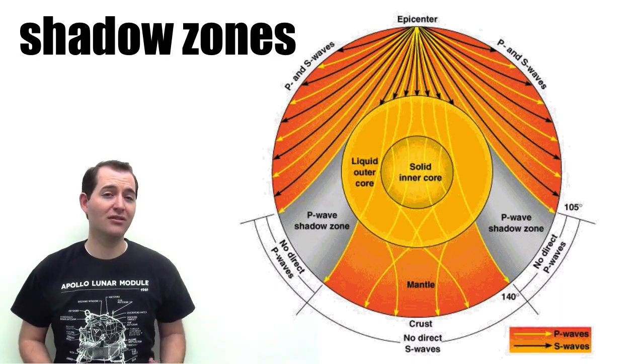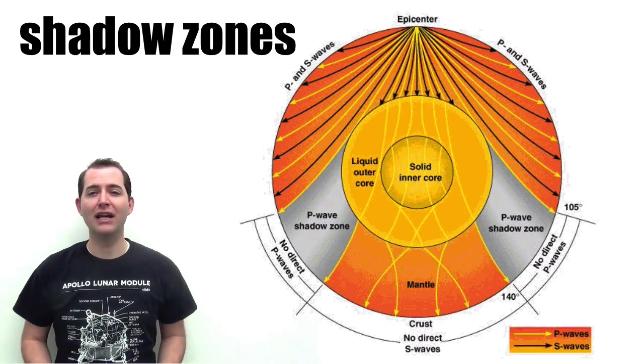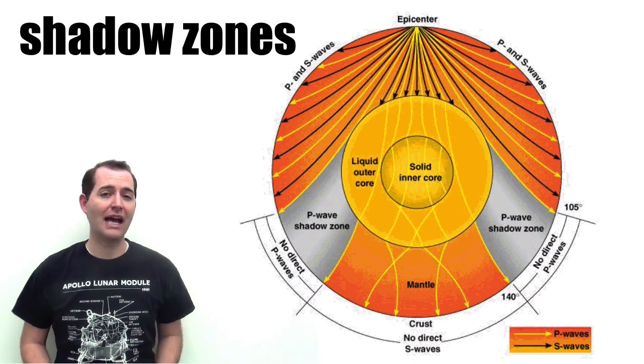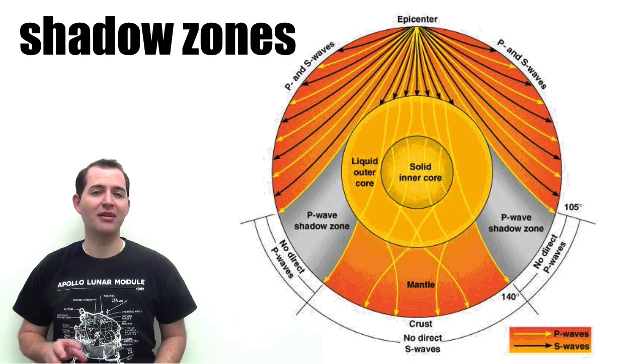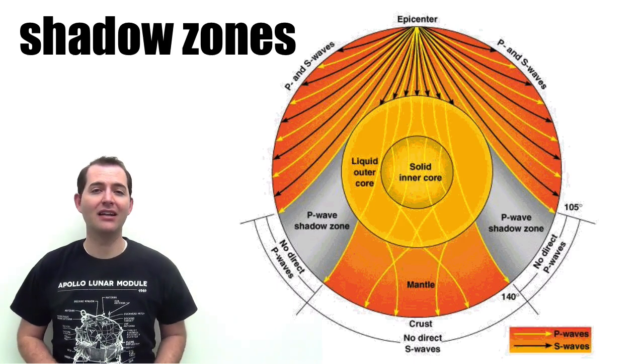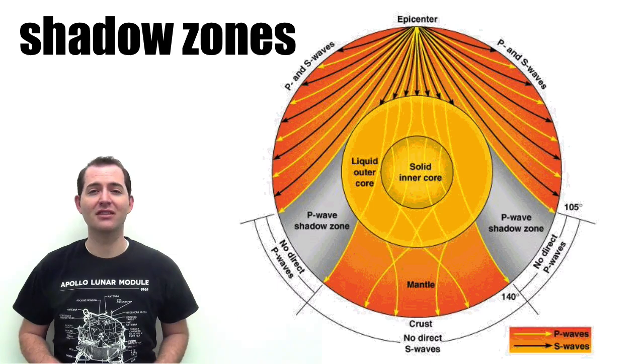These are locations around the Earth where these waves cannot be detected when an earthquake happens. And again, these shadow zones are caused by the properties of P and S waves, and of the properties of the layers of the Earth.